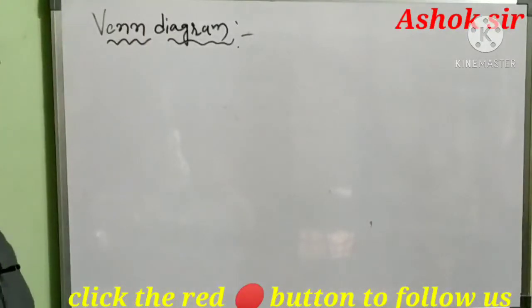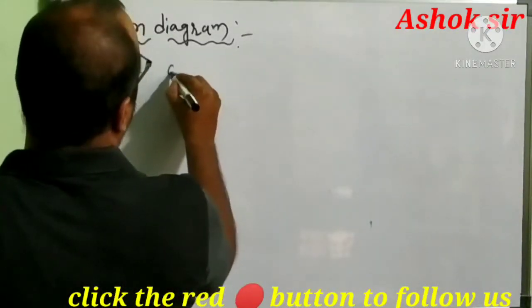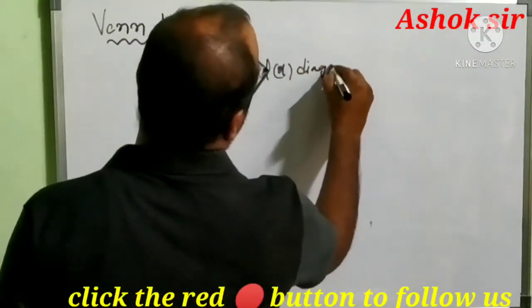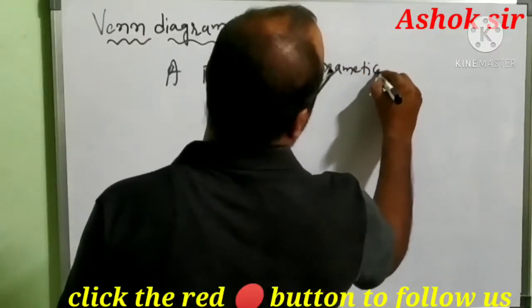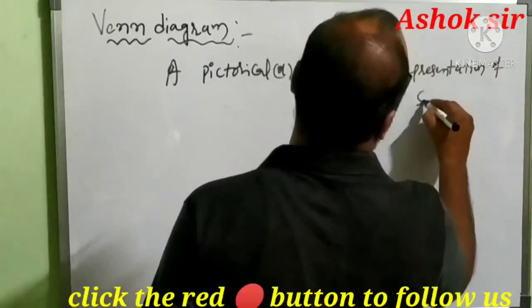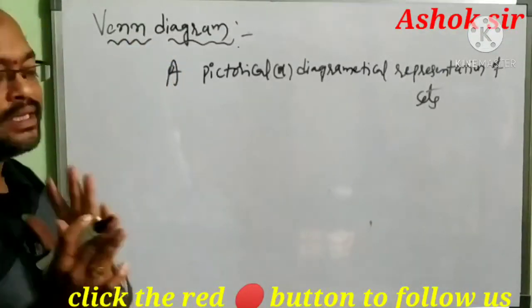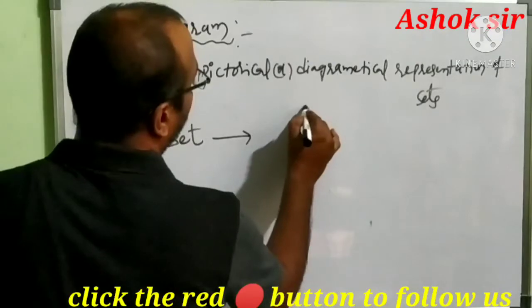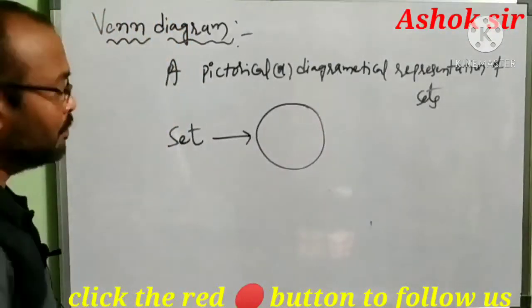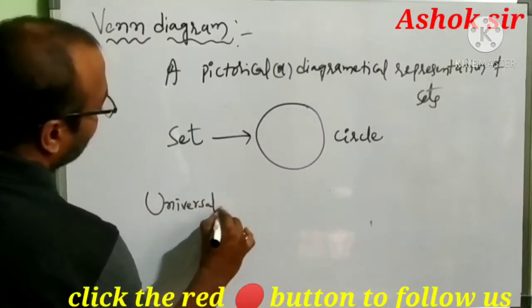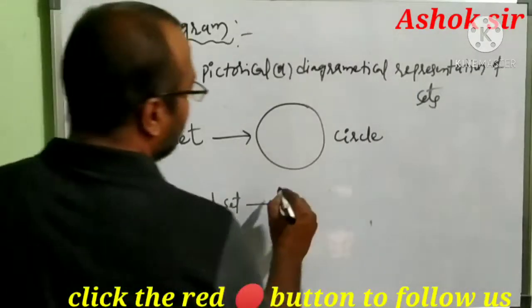What is a Venn diagram? A Venn diagram is a pictorial or diagrammatical representation of sets. In a Venn diagram, a set becomes a circle, and the universal set becomes a rectangular box.